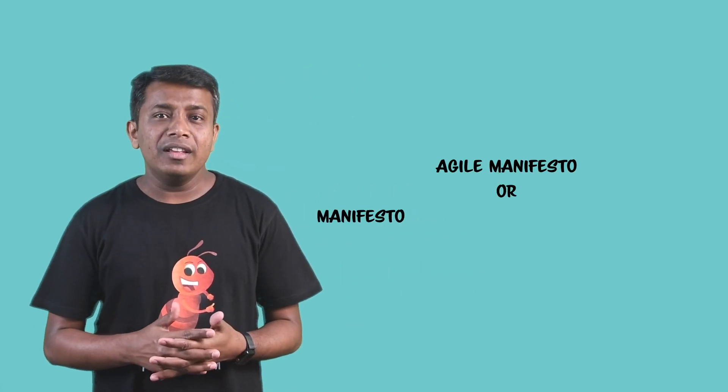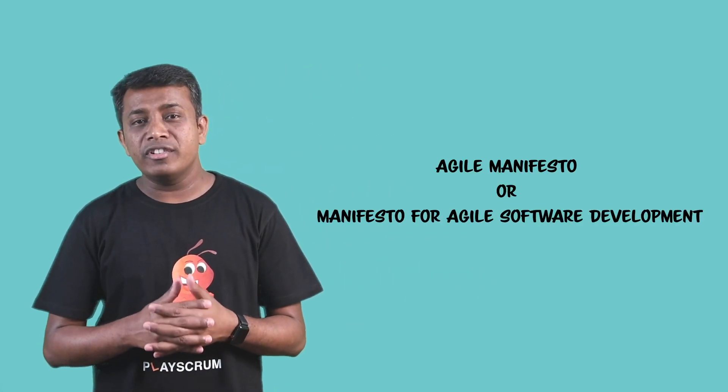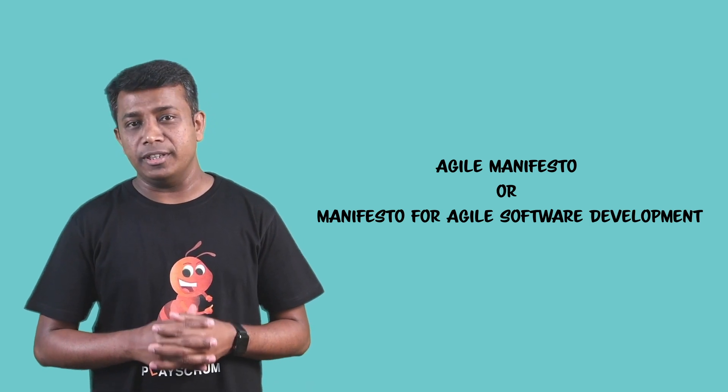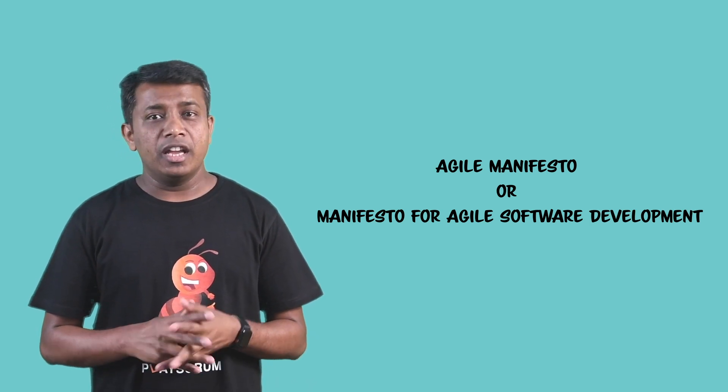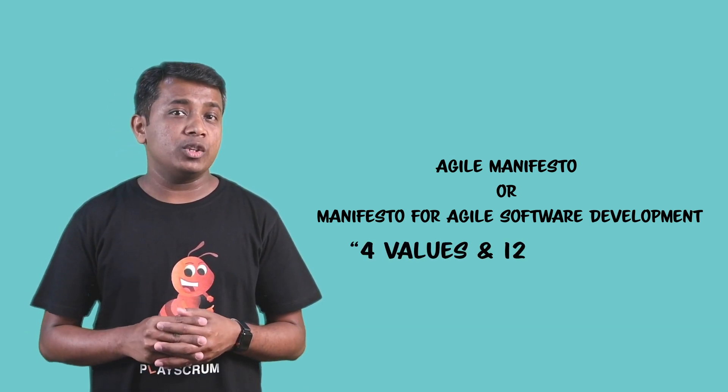What is a manifesto? It's a written statement of the beliefs, aims, and policies of an organization or a group. Basically, it's a set of values and principles agreed upon by a set of people. So what is an Agile Manifesto? It's actually called the Manifesto for Agile Software Development, and it's a set of four values and 12 principles.